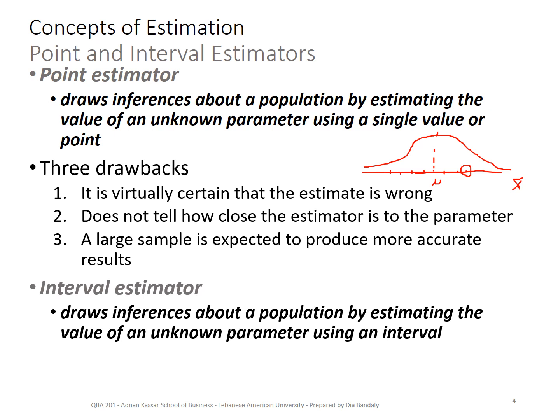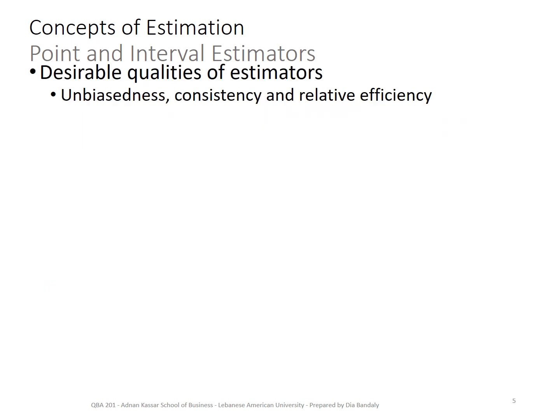The second type is the interval estimator — we draw an inference about a population by estimating the value of the parameter using an interval with a known upper limit and lower limit. Before explaining how to develop an estimation interval, let's talk about what makes a good estimator. It should be unbiased, consistent, and have relative efficiency.